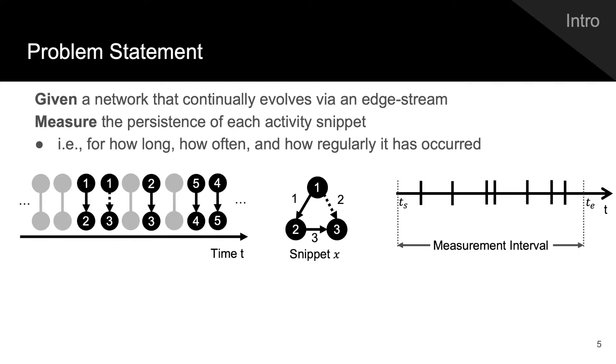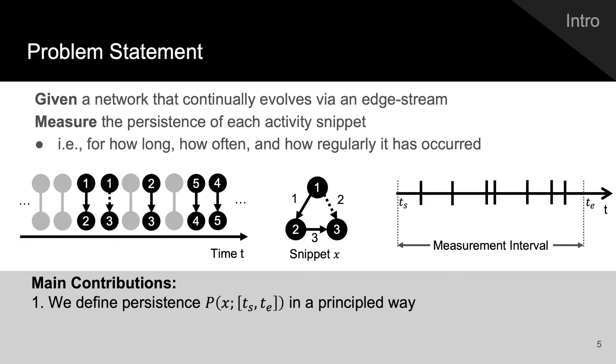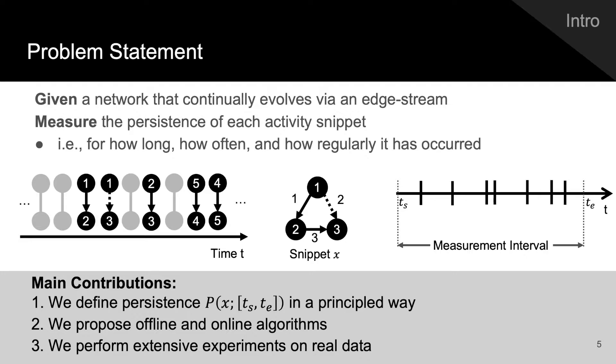To solve this problem, analogously to how the axioms of a distance metric specify the properties that any measure of distance ought to follow, we introduce axioms that a measure of persistence needs to follow. We develop one such persistence measure and propose offline and online algorithms to measure persistence in evolving networks, whether they be timestamped sequences of edges from the past or real-time edge streams. We then perform extensive experiments on real data to demonstrate the insights that measuring persistence can provide.